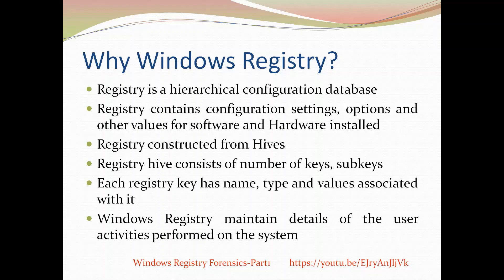How is this information maintained? The Windows Registry is constructed at the time of booting. There are many hives available on the hard disk — files with the extension .dat — and the Windows Registry is constructed from those hives. Each registry hive consists of a number of keys and subkeys, and each registry key has certain names, types, and associated values.